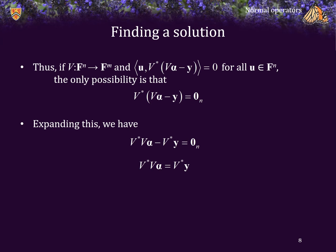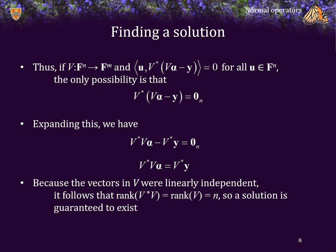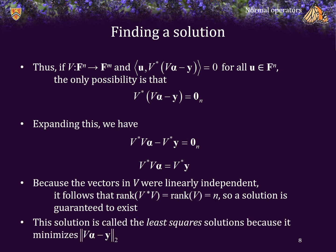And these are called the normal equations. Why are they called the normal equations? Well, you may recall that the adjoint of V times V is normal. So because the vectors in V were linearly independent, it follows that the rank of the adjoint of V times V is equal to the rank of V, which is equal to n. So a solution is guaranteed to exist. Also, this solution is called the least squares solution because it minimizes the two-norm. And the two-norm of a vector is the sum of the squares of the entries of that vector. So this is the solution that minimizes that sum of squares.